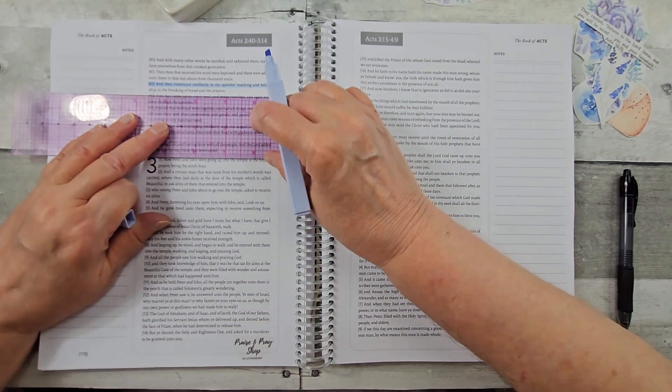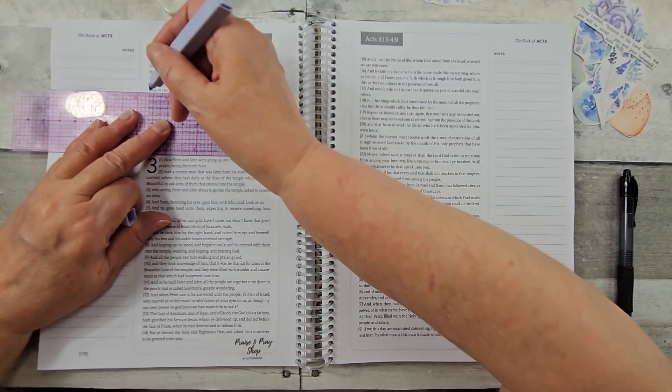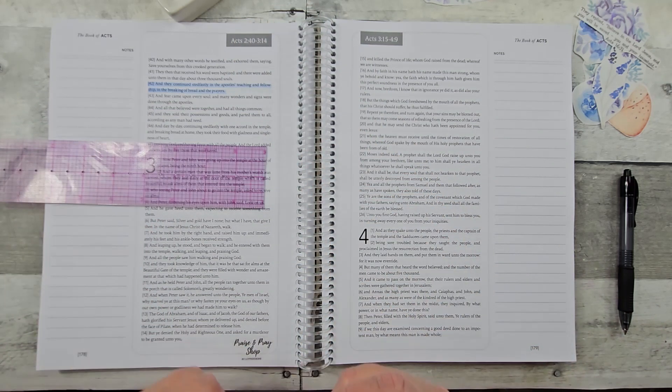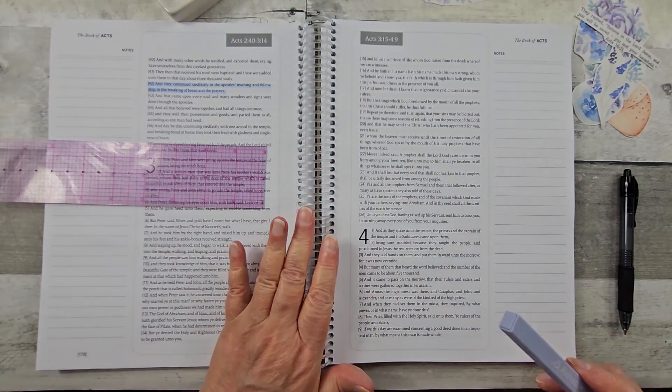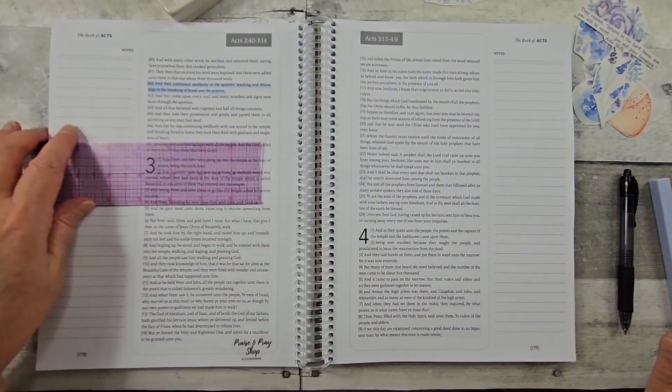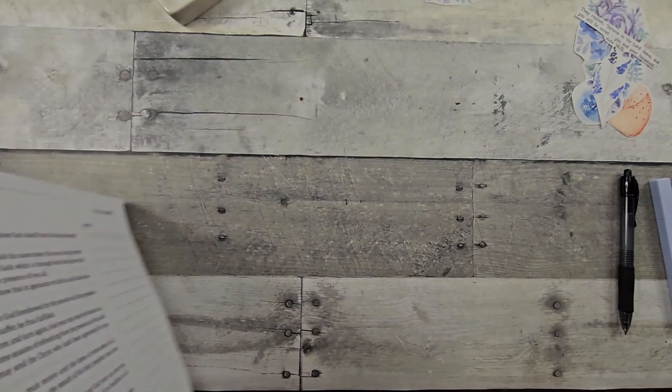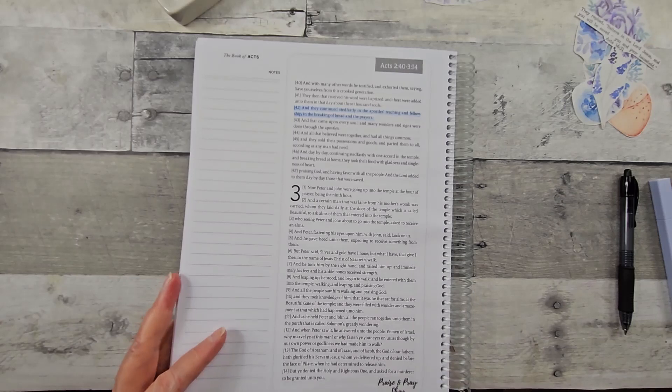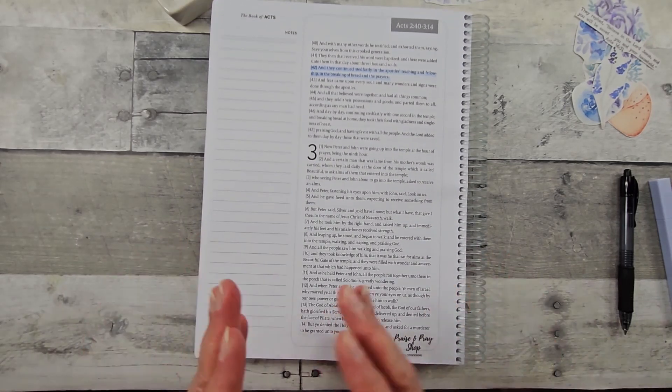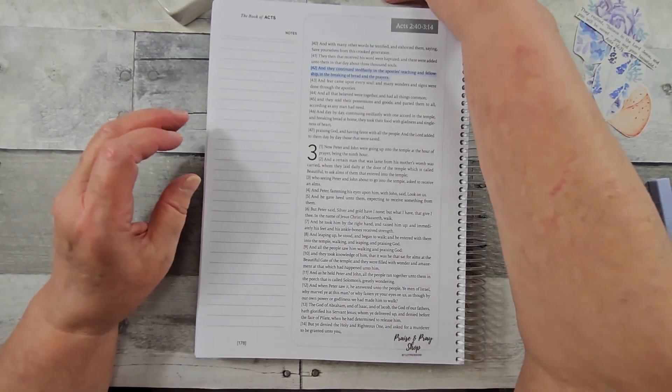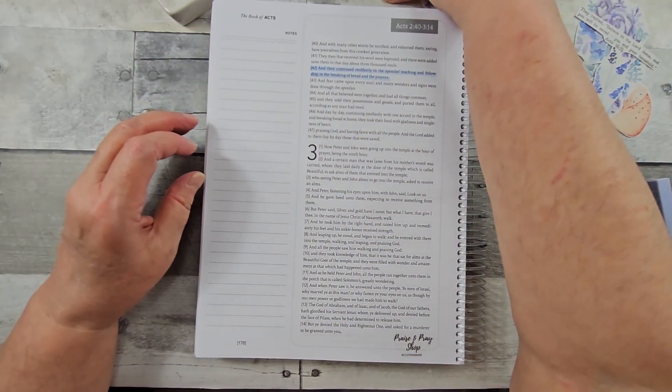If you've watched some of my videos before, one of the things that I like about this Spiral Bible is it lays flat. I can fold it back on itself. Very portable. That's why I do like that they broke it down into the New Testament.